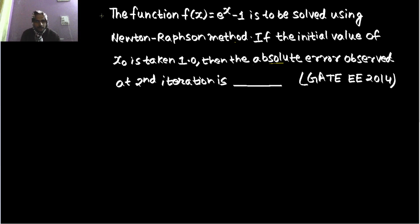The function f(x) equals e^x minus 1 is to be solved using Newton-Raphson method. If the initial value of x0 is taken 1, then the absolute error observed at the second iteration is...